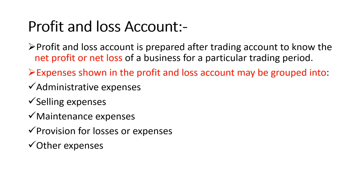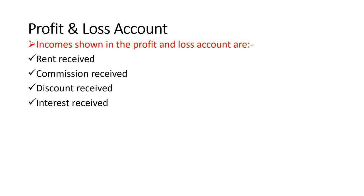By considering all these expenses on the debit side, on the credit side we take all indirect incomes. For example, commission received, discount received, and rent received. Incomes shown in the profit and loss account include rent received, commission received, discount received, and interest received. All these incomes or receipts we write on the credit side of the profit and loss account. By considering all expenses and incomes, we can find net profit or net loss for the business.